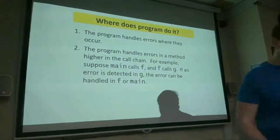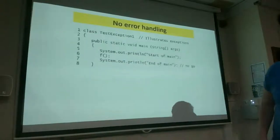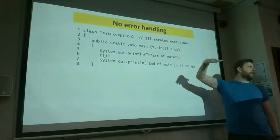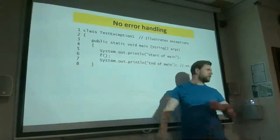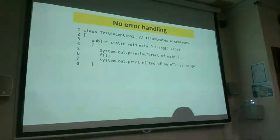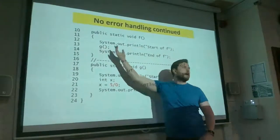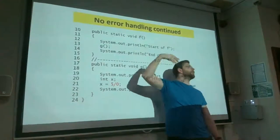Here's an example: method main calls method f, method f calls method g, and the error occurs in g. We have print statements so we can see how far we get before a crash. The expected output is: start of main, start of f, start of g, end of g, end of f, end of main. Inside method g, we have 'x = 5 / 0' — a division by zero — which will immediately cause a problem.